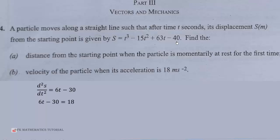So, we get 6t - 30 equals 18 because the acceleration equals 18 meters per second squared. So, we solve for the time to get t equal to 8 seconds. So, when t equals 8 seconds, then we find the velocity v(8) to be equal to 51 meters per second.